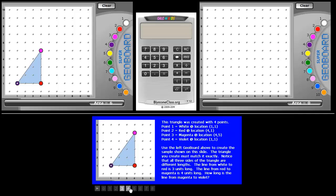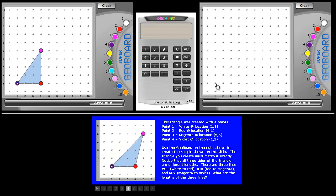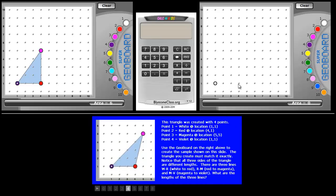The next slide asks the same question: What are the lengths of the three lines? However, this time the triangle is no longer a right triangle because no angle within the triangle is 90 degrees.